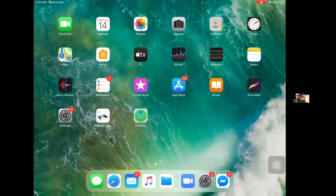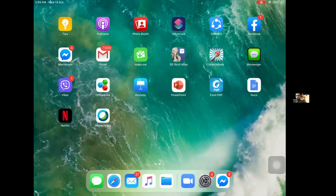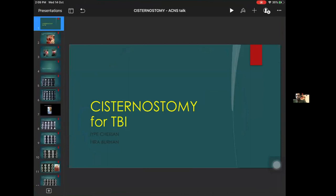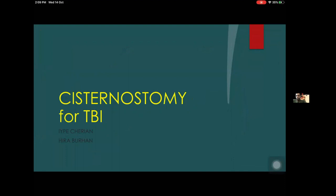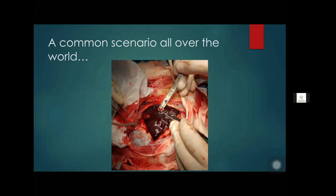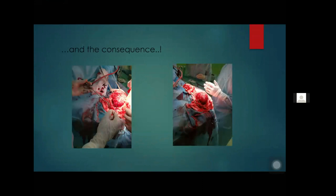I'll go into trauma — how we use skull base and vascular principles for trauma. That's what I'm going to show you. You can see my screen? Yes. Okay. So this is a common scenario all over the world. In fact, the most common scenario — more than any tumors, more than any aneurysms. The most common scenario you will see is trauma. This is the acute subdural hematoma. The surgeon is removing the acute subdural hematoma, and this is what happens. How do you avoid this? That will be my talk.